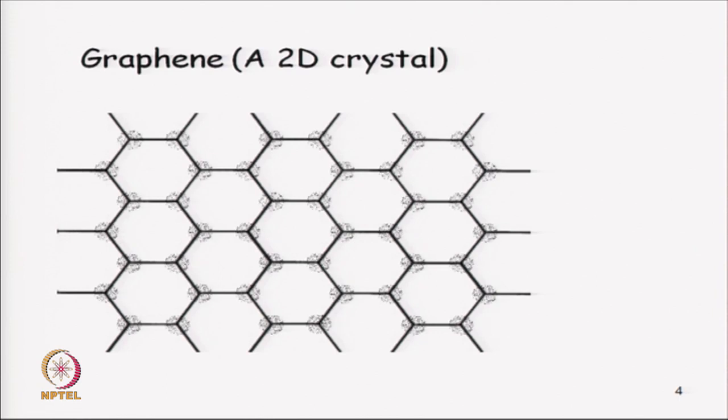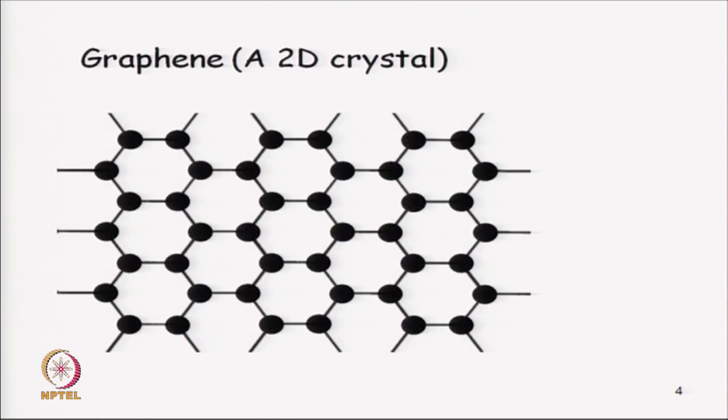Let me do that. I have now placed a circle which represents a carbon atom at each of these sides, at each of the corners or vertices of the hexagons. Now, let us analyze this two dimensional crystal structure in terms of lattice and motif.